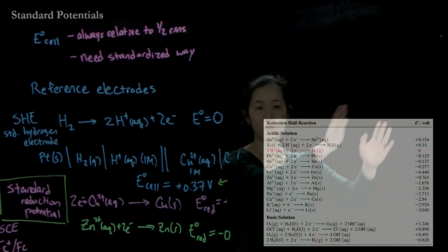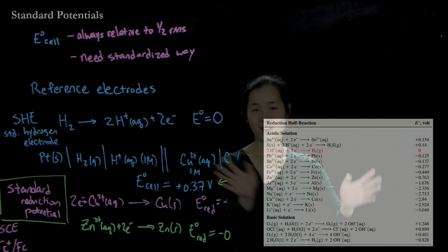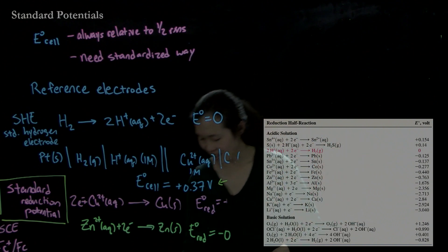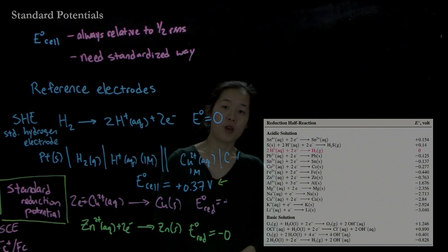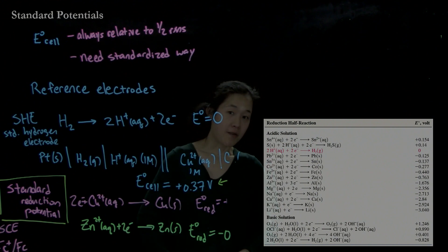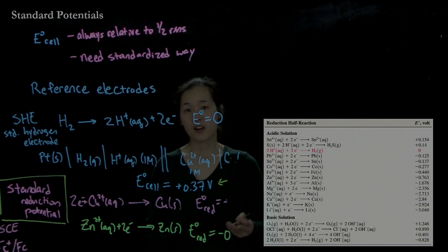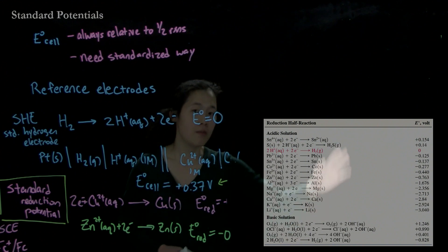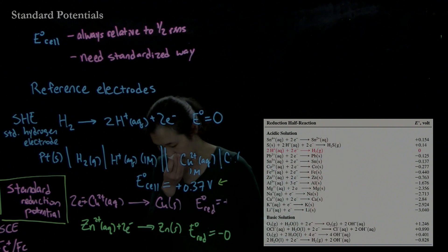Keep in mind, we always report reduction potentials. I keep on saying it over and over again because it's really important. So because of that, we can now use our different balanced half-reactions to figure out the E-cell if we combine multiple components of these half-reactions together.